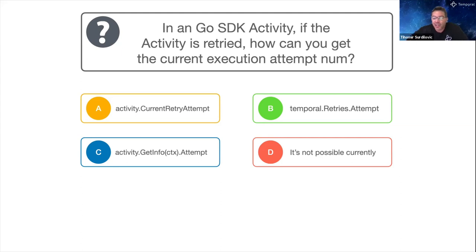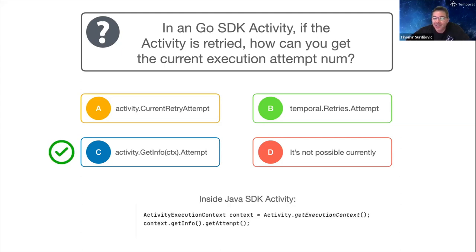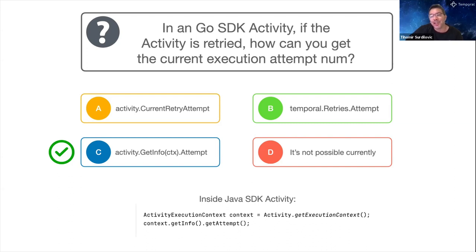Whoever answered C, you were correct. It is activity.GetInfo passing in the activity context and calling Attempt. In the Java SDK, you get it by creating an ActivityExecutionContext and calling getInfo().getAttempt(). Don't forget it starts with one, so the first attempt is 1, not 0.